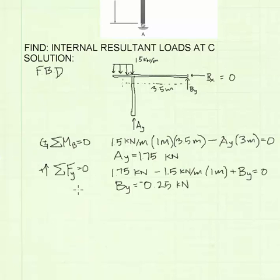Now summing the forces in the Y direction: we have our reaction force found previously, 1.75 kilonewtons at A acting upward, so it's positive. Then we have our distributed load, 1.5 kilonewtons per meter acting over one meter, acting downward, plus our vertical reaction force at B.